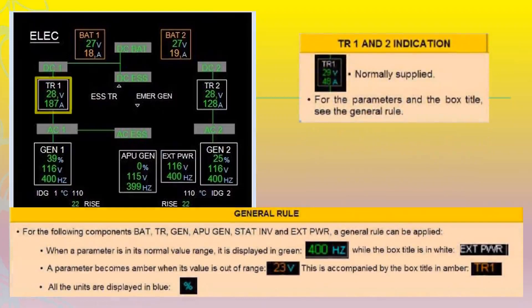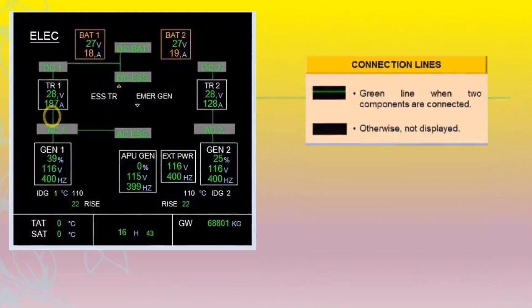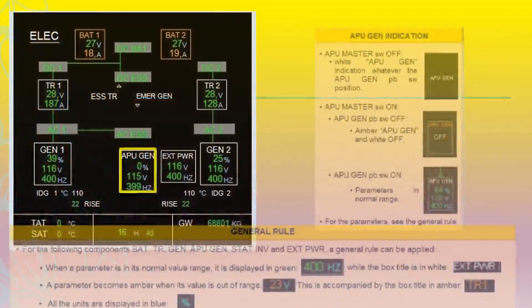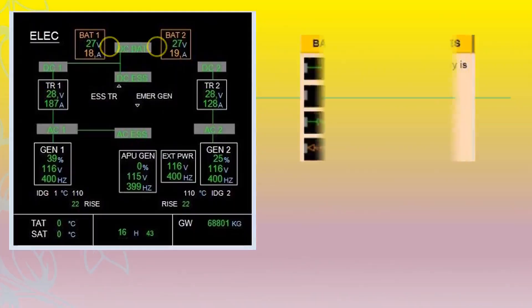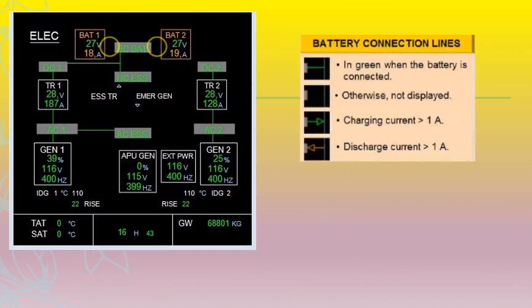Transformer rectifier units convert AC current to DC. They show green when normally supplied, and green lines appear when two components are connected, otherwise not displayed. When the APU master switch is in the off position, a white indication of APU GEN shows regardless of the position of the APU GEN pushbutton. When both APU GEN and master switch pushbutton are on, the parameters show in green when in normal range.